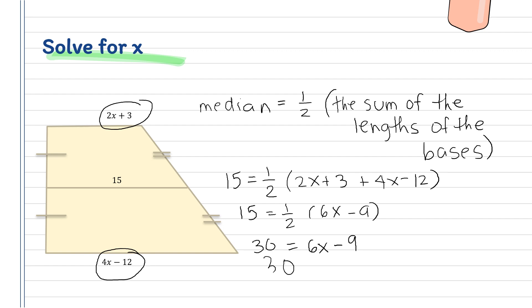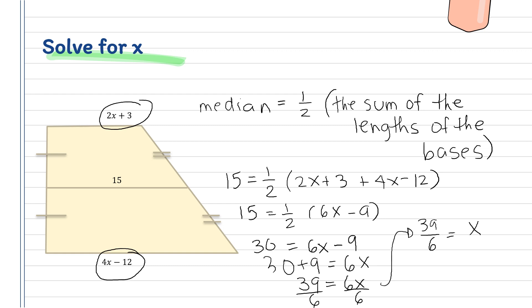So 30 + 9 = 6x, giving us 39 = 6x. Dividing both sides by 6, we have x = 39/6, or simplified, x = 13/2.